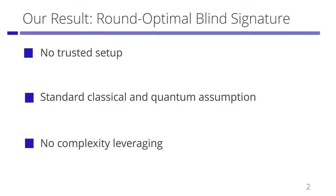This is a short summary of our work. We present a round optimal blind signature protocol with three desirable properties. First, it does not rely on any trusted setup such as the CRS model. Second, it is based on standard assumptions, using both classically and quantumly secure tools. Lastly, it does not rely on complexity leveraging.